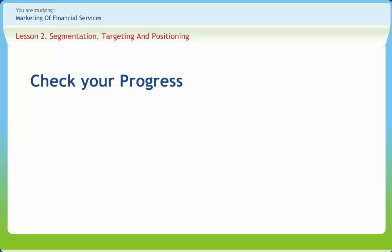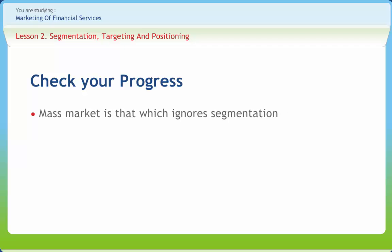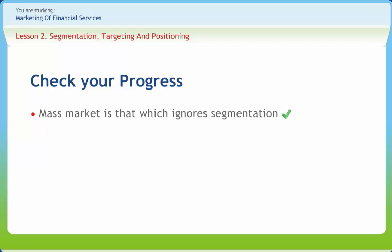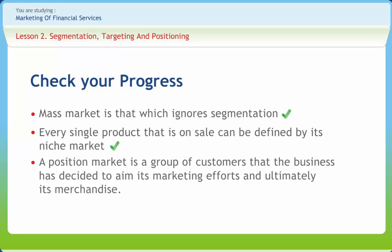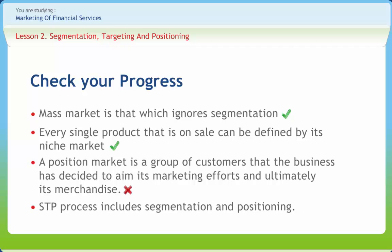Let's check if you have understood the concepts discussed in this lesson. Mass market is that which ignores segmentation — right or wrong? Right. Every single product on sale can be defined by its niche market — right or wrong? Right. A position market is a group of customers that the business has decided to aim its marketing efforts and ultimately its merchandise at — right or wrong? Wrong. The STP process includes segmentation and positioning — right or wrong? Wrong.